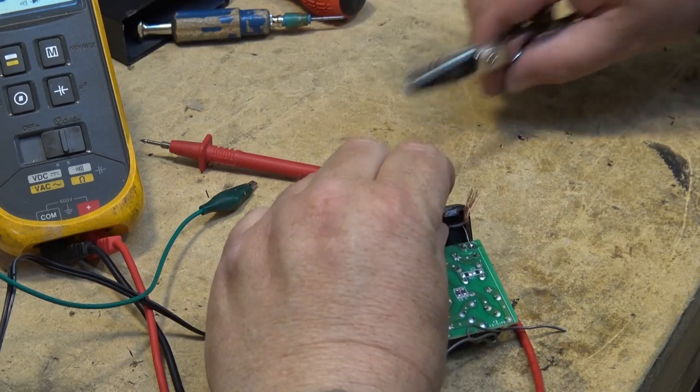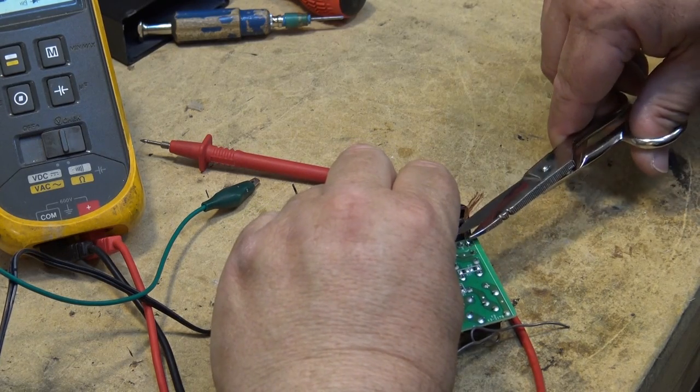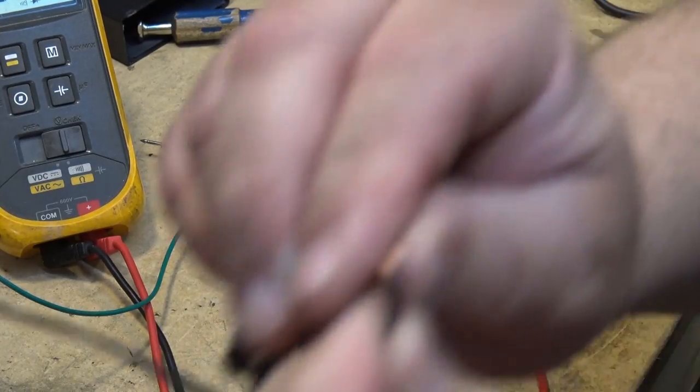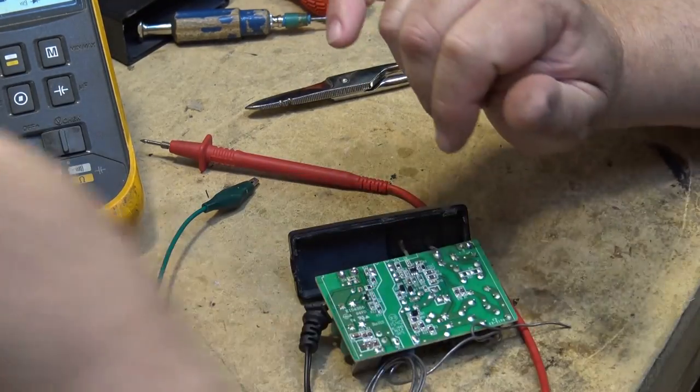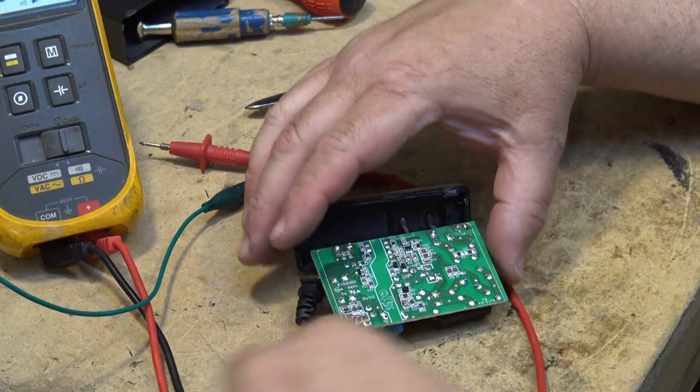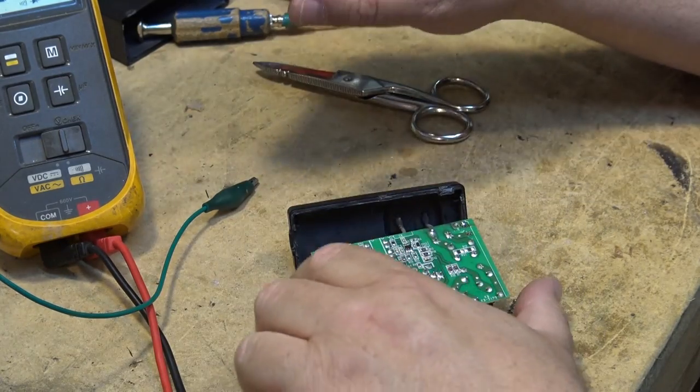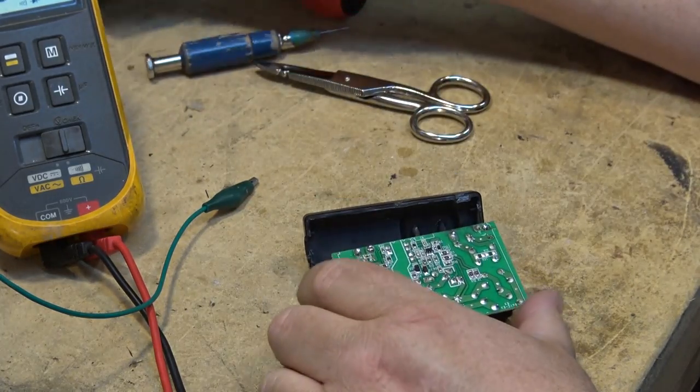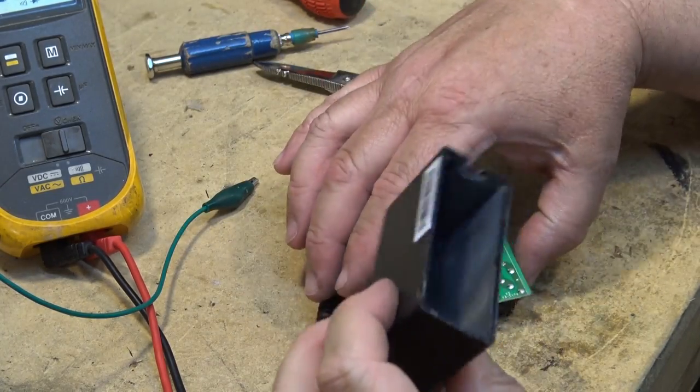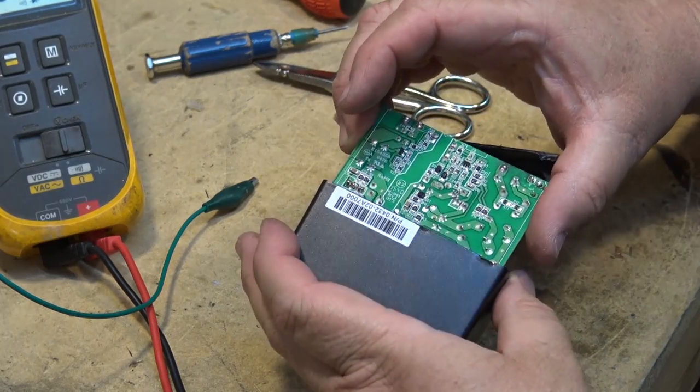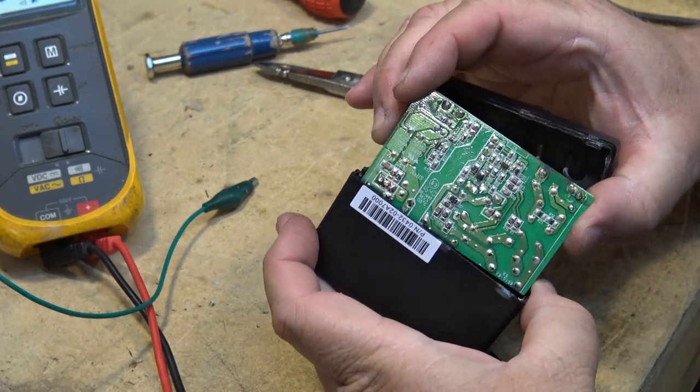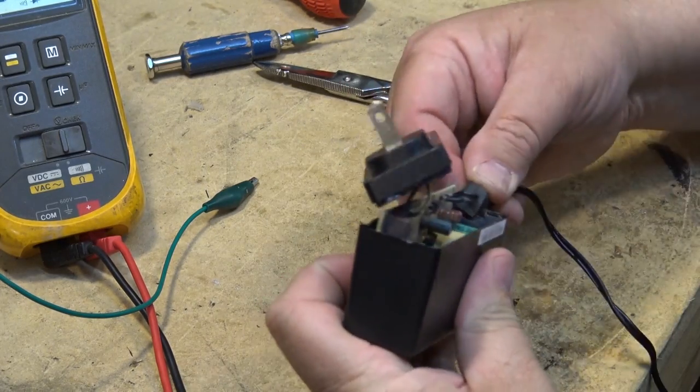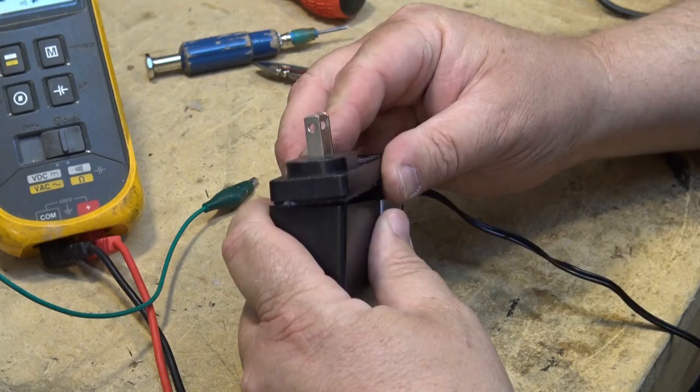Now obviously if there was a problem, if there was a short, this little single strand of wire that I just put on is going to fail. It's not going to cause a fire, it's not going to cause an explosion. If there's a short, if something else is going to fail, that's just going to pop just like a fuse.